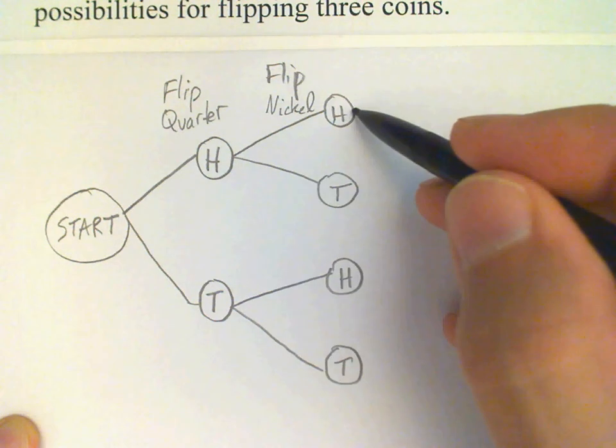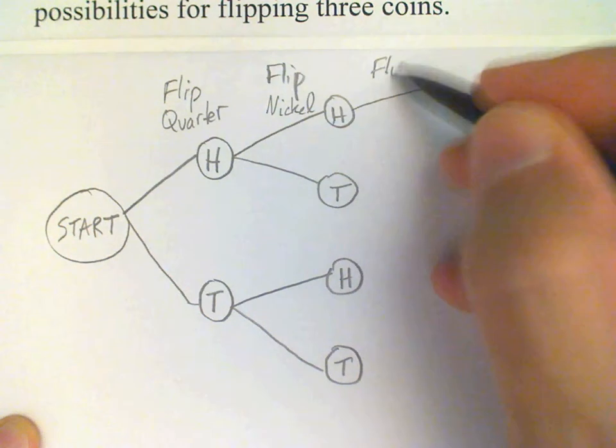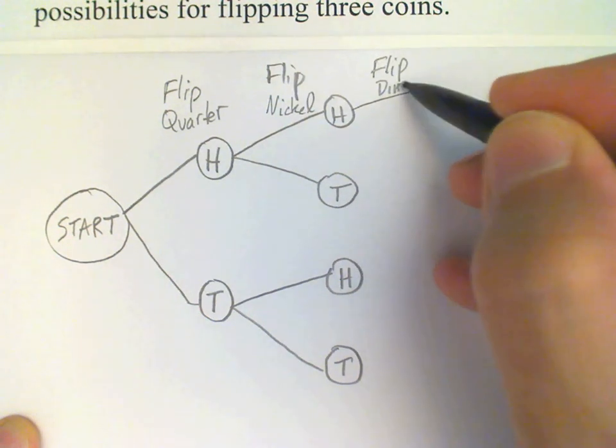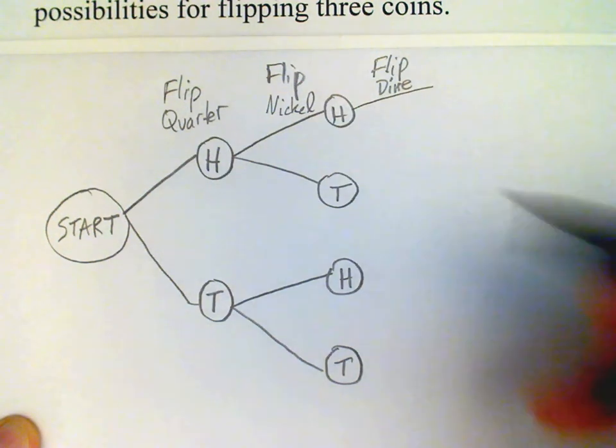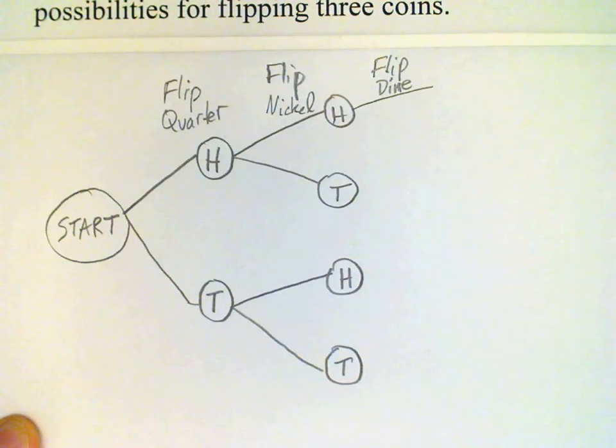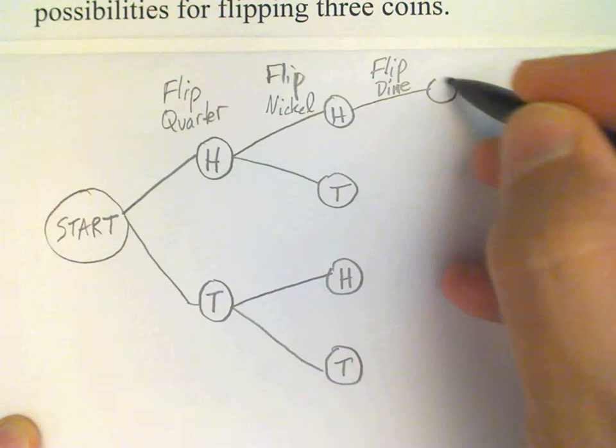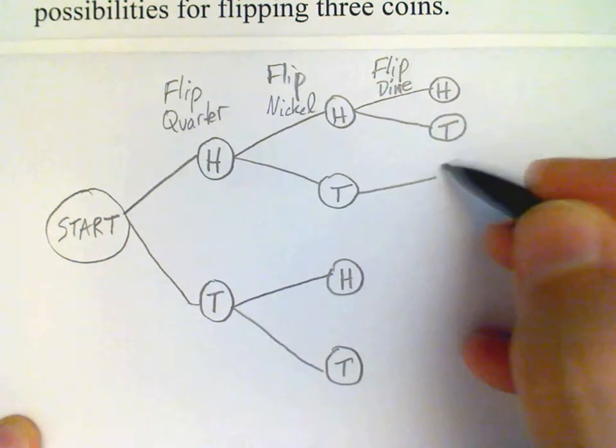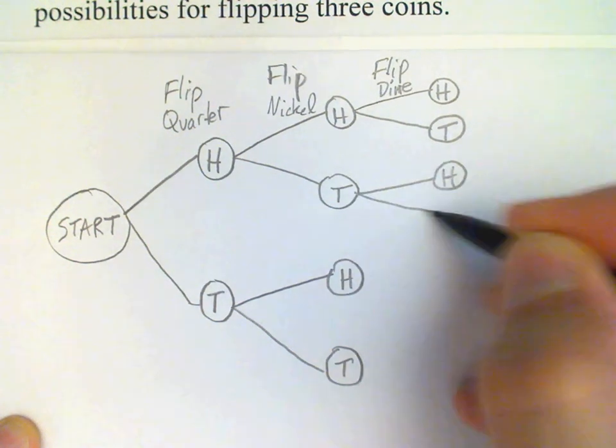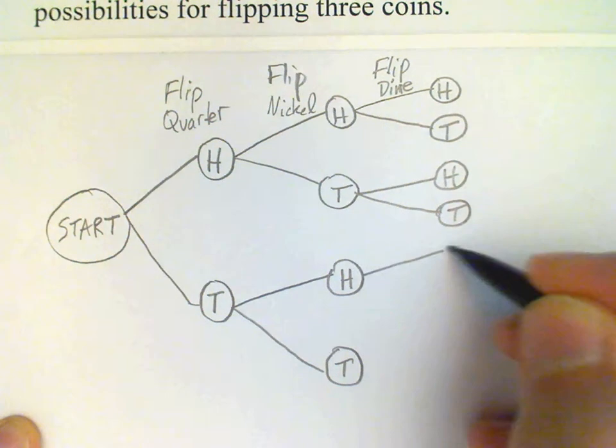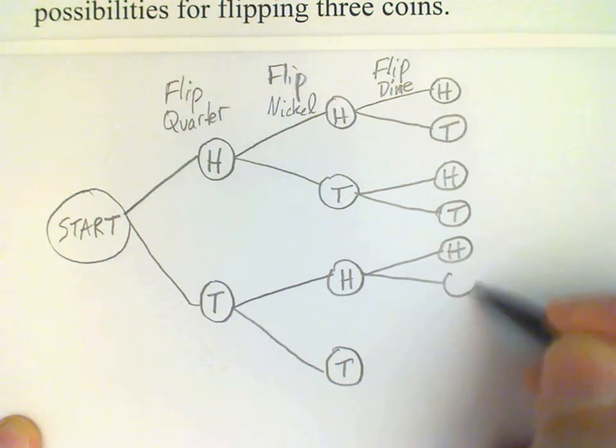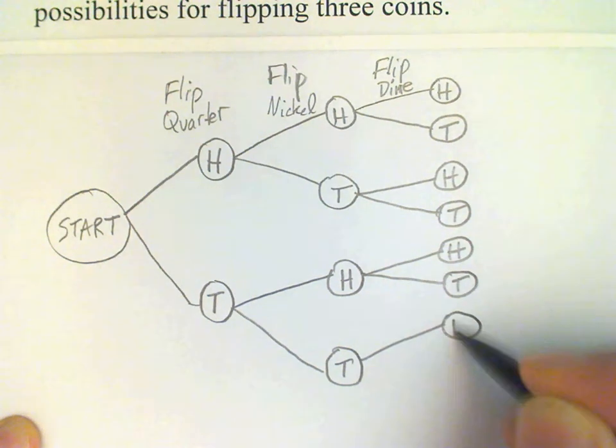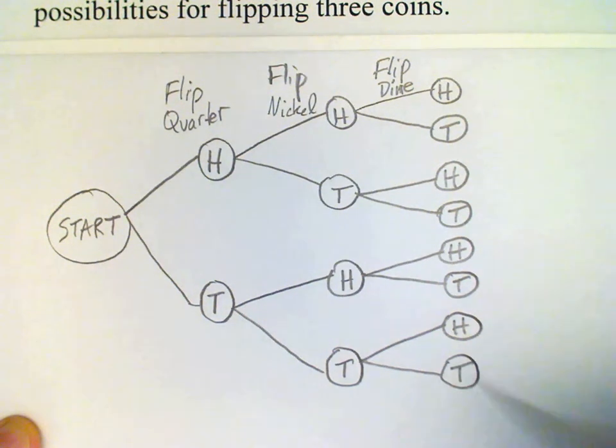And then finally, we're going to flip the dime. Two more possibilities there. Okay, for each branch of the tree, we're going to flip the dime. And then, this is our completed tree diagram for the problem of flipping three coins.